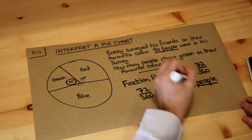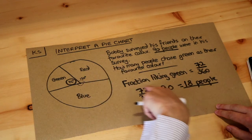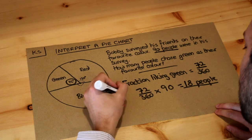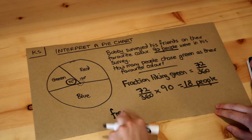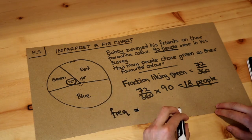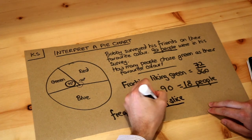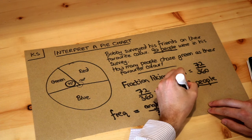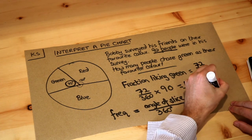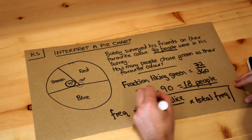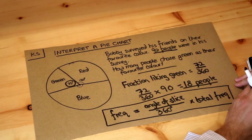And that is the final answer. If you really wanted to memorise a formula for this — I don't recommend it — the formula is: frequency equals the angle of the slice divided by 360 degrees, times the total frequency; in this case, 90 people. But I prefer not to memorise formulas in maths where possible — I prefer to think about what I'm doing.